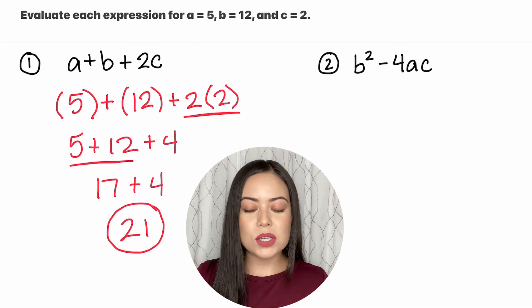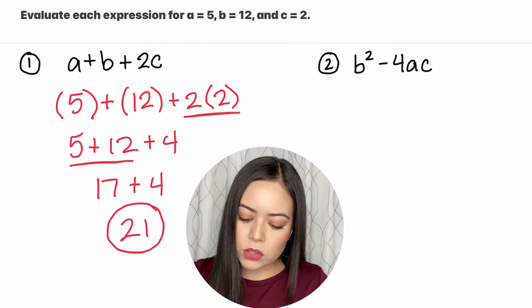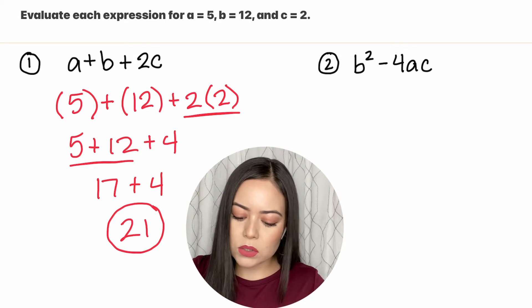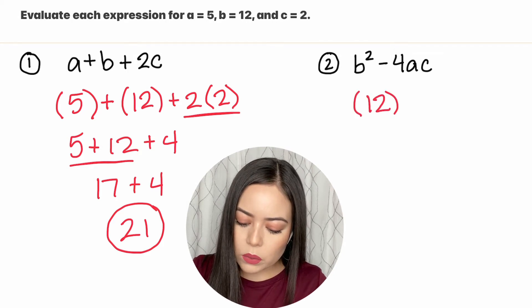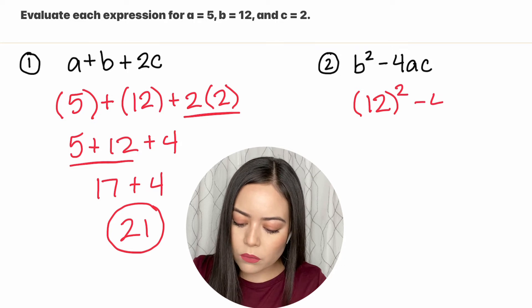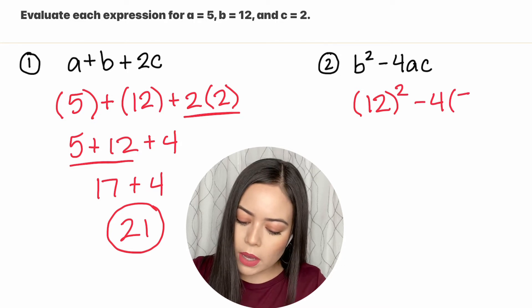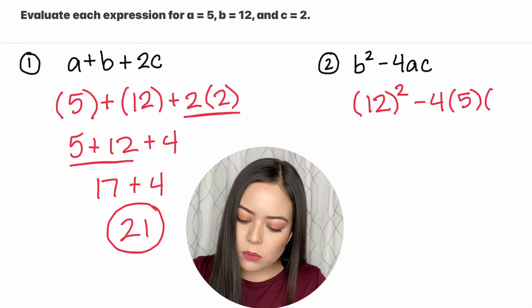Let's try it with question two. So here they want us to do b squared minus 4ac. So again b value is 12, so we're going to write 12 squared minus 4 times a which is 5 times c which is 2.